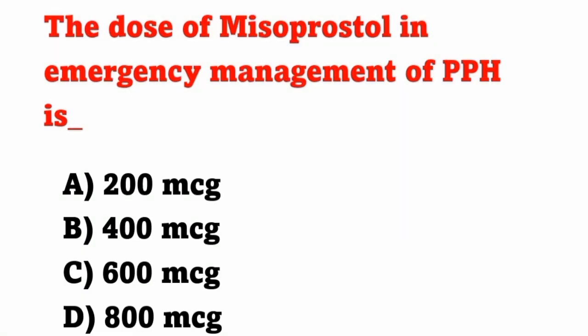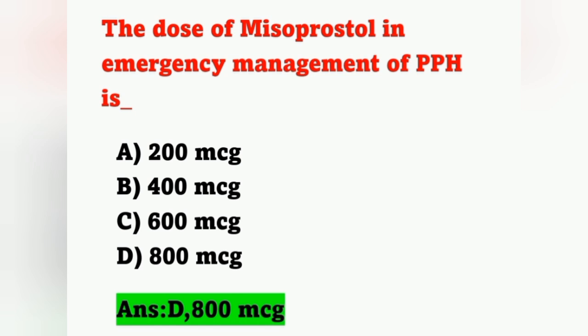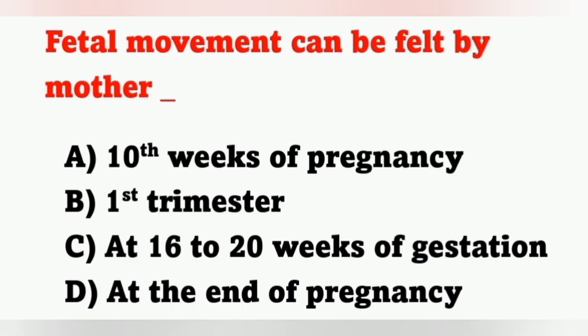The next question: the dose of misoprostol in emergency management of PPH. Options — A: 200 mcg, B: 400 mcg, C: 600 mcg, D: 800 mcg. The dose of misoprostol in emergency management of PPH is 800 micrograms — option D is the correct answer.